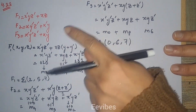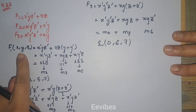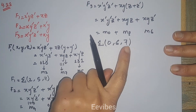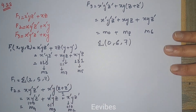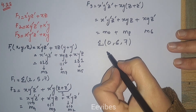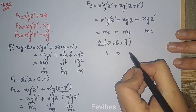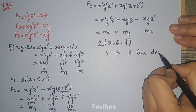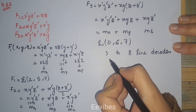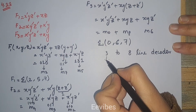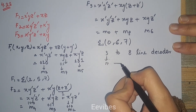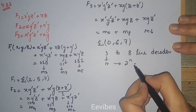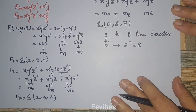Once we have identified all the minterm expressions, the next step is to select the decoder. Since three variables are involved and the maximum output contains 8 minterms, we will choose a 3-to-8 line decoder. This corresponds to n=3 inputs and 2-raised-to-3 equals 8 output lines.